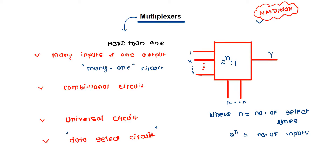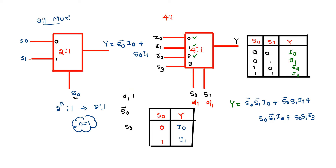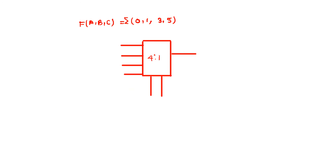Welcome back. In the previous session, we completed the introduction of the multiplexer — how to represent it, the truth table, and the mathematical expression. We also covered why it is called a universal circuit, a data select circuit, and a many-to-one circuit. Now let us solve one problem.